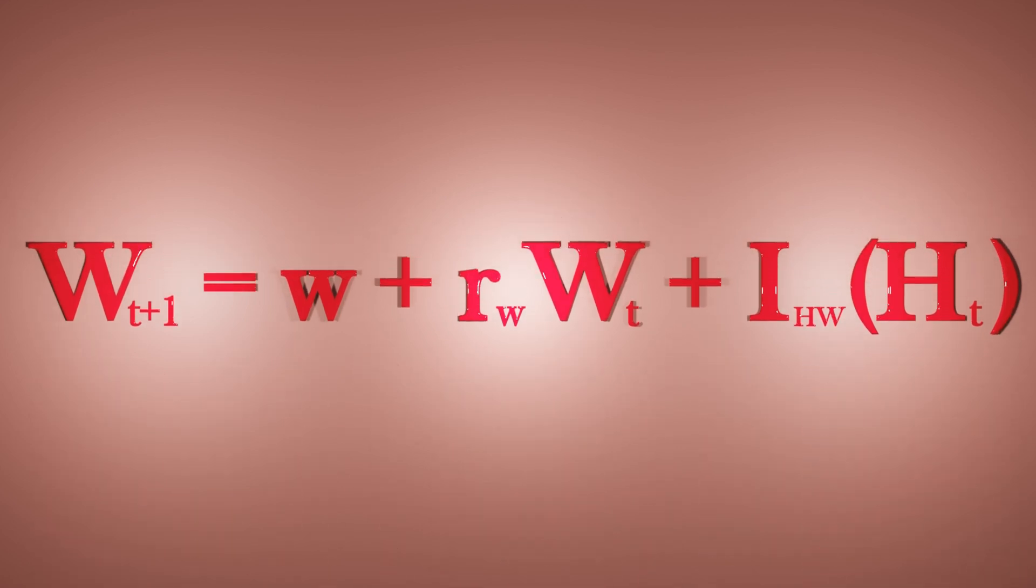If we take the top line, the wife's equation, we can break down how these equations work. The left hand side of the equation is simply how positive or negative the wife will be in the next thing she says. Her reaction will depend on her mood in general, her mood when she's with her husband,